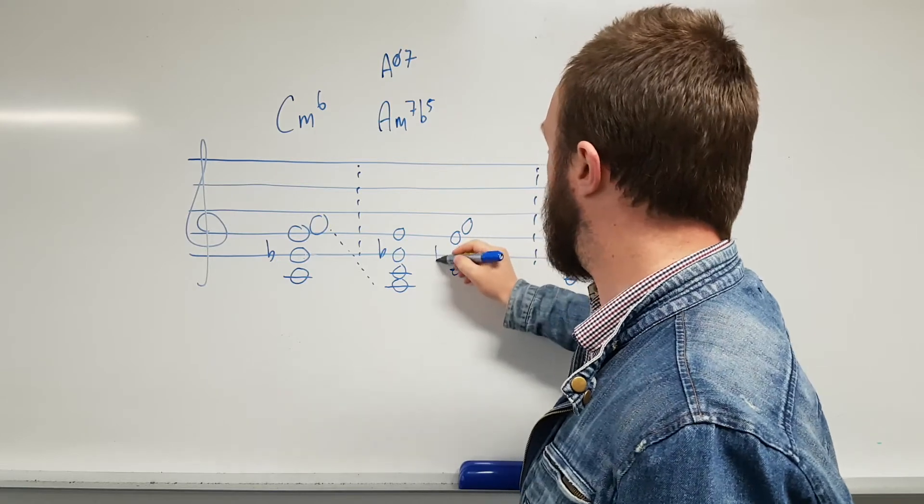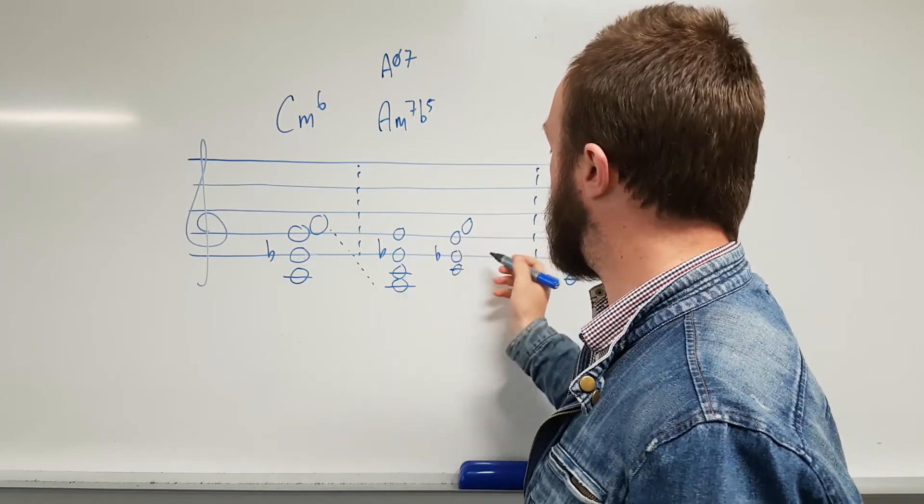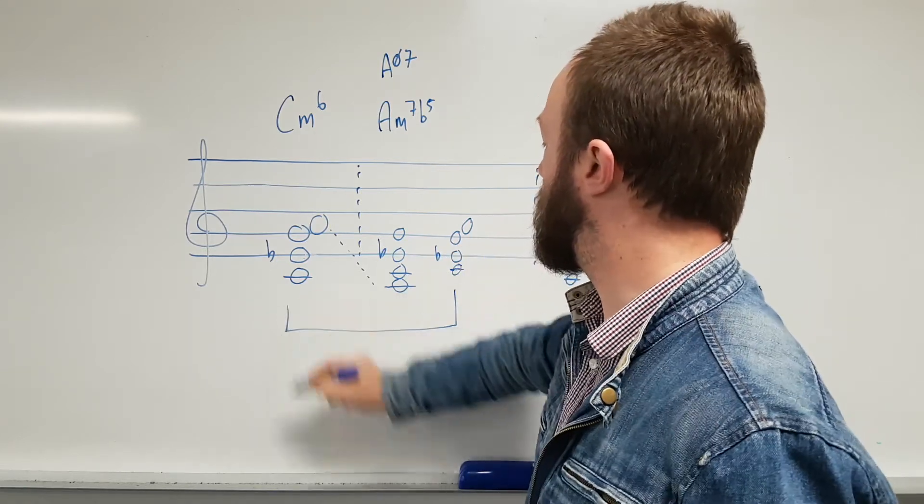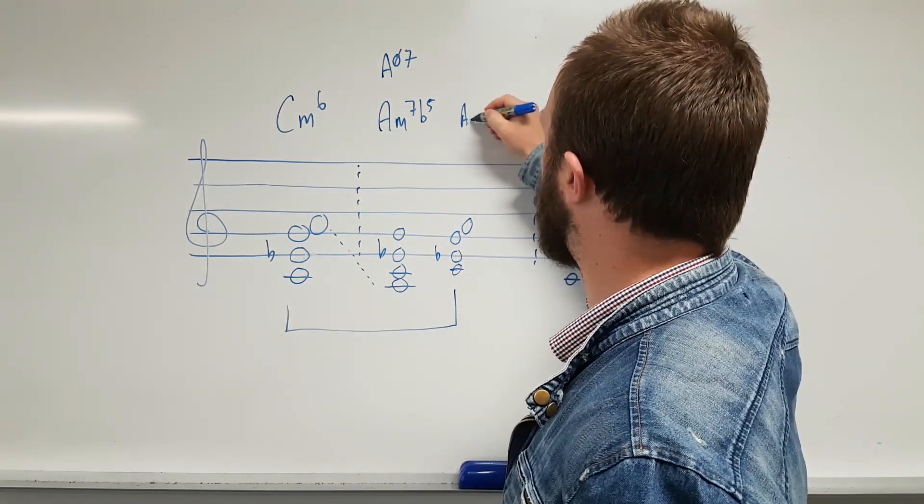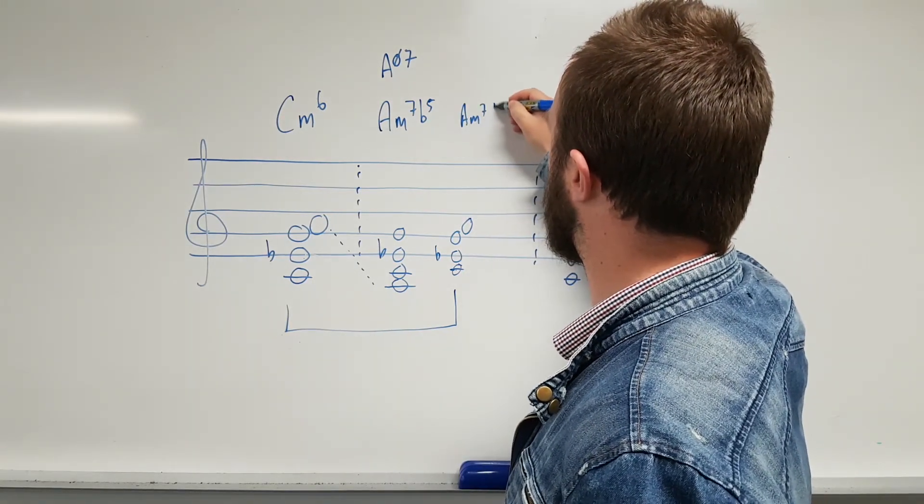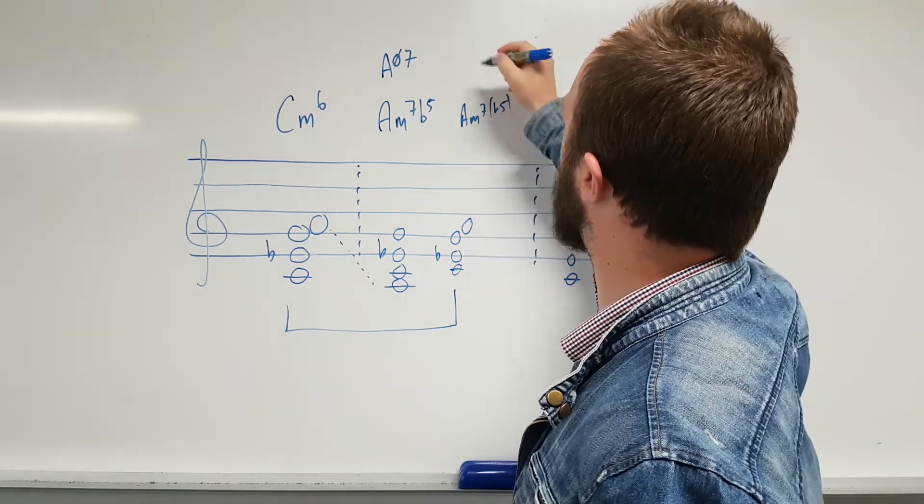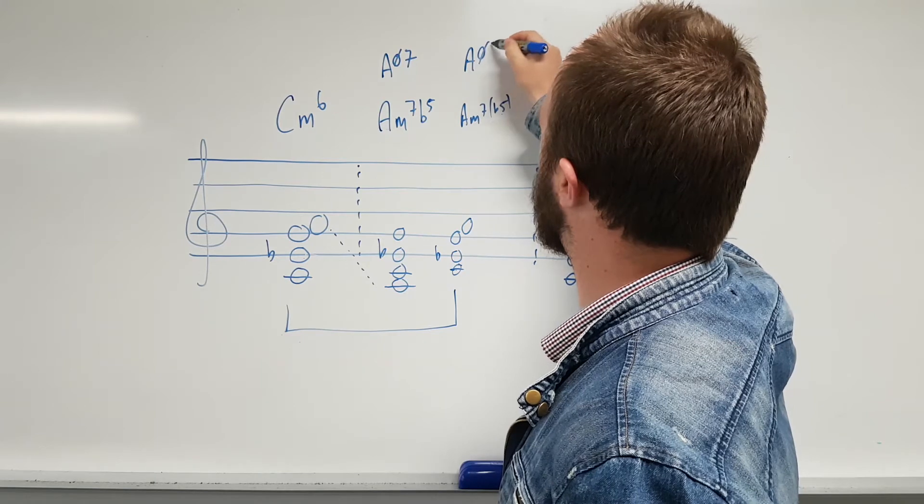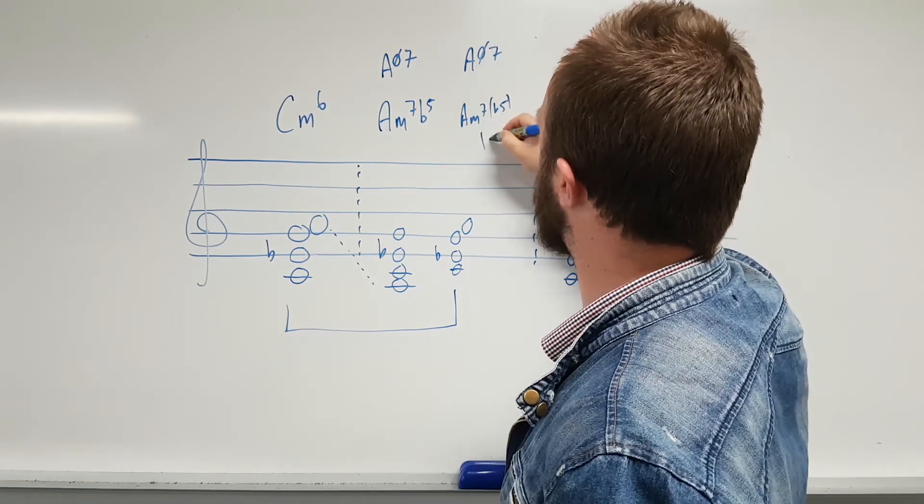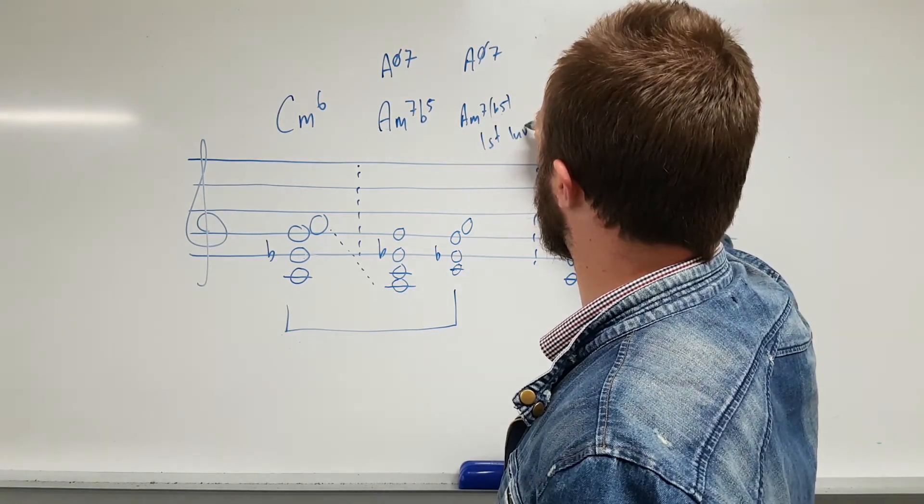And then if we move the root note back up again, these are the same chords. So we could say it's an A minor seven flat five, or an A half diminished seven in first inversion.